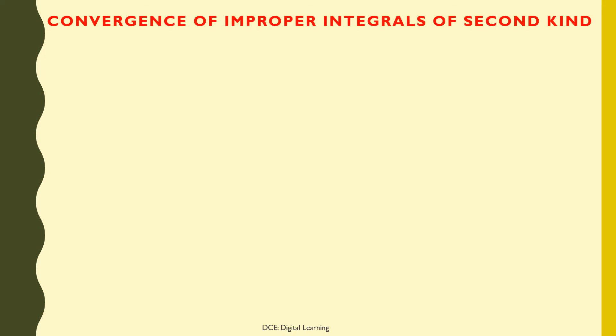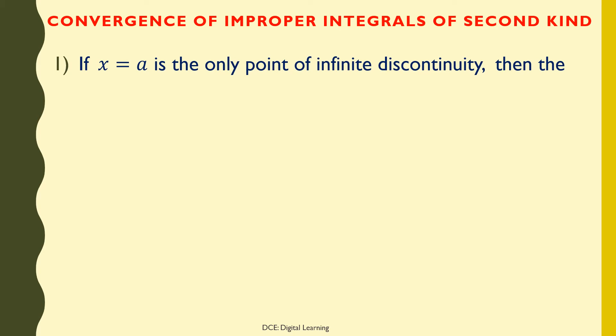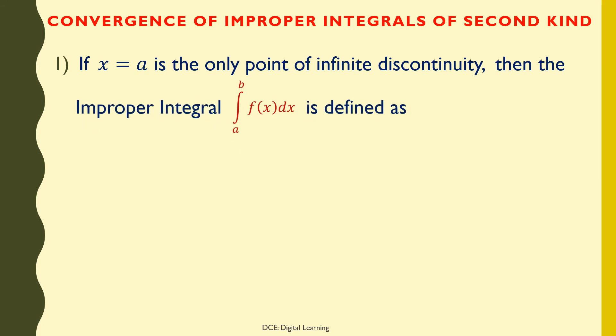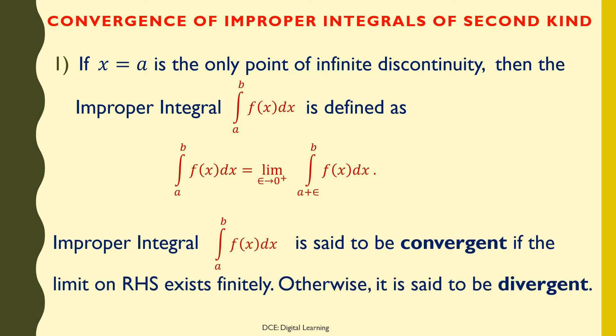Convergence of improper integrals of second kind. If x = a is the only point of infinite discontinuity, then the improper integral of f(x) dx from a to b is defined as the limit of the integral of f(x) dx from a + ε to b as ε tends to 0 from the right. This improper integral is convergent if the limit on the right-hand side exists finitely; otherwise, it is divergent.